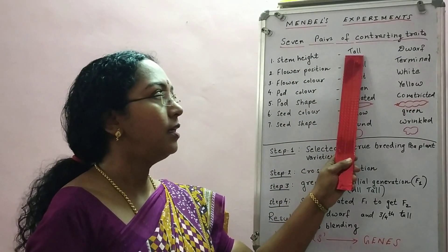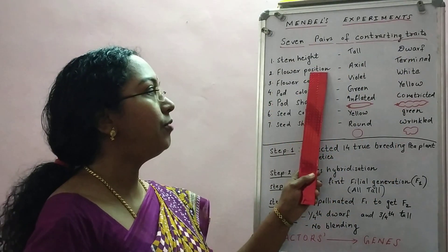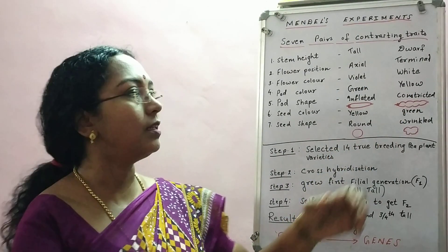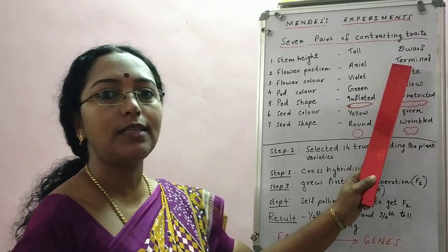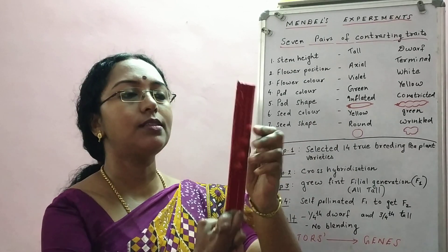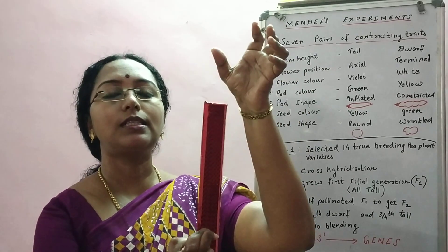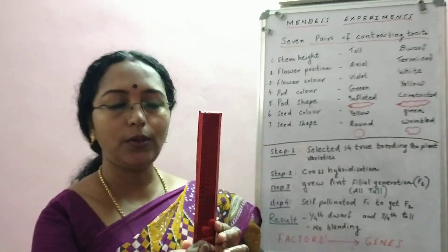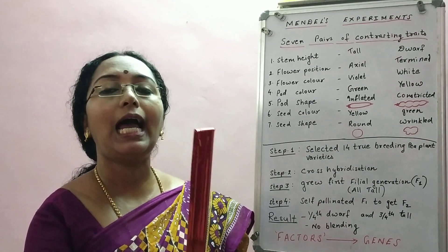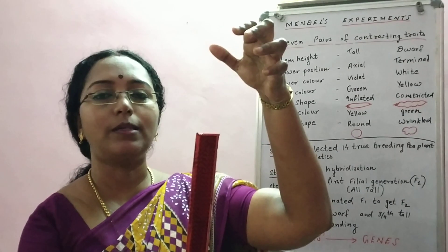For flower position, the flower is either axial or terminal. 'Terminal' means at the end — if flowers are at the end of the plant, the flower position is terminal. But if flowers come from the axis areas of the plant, you call it axial. So in some pea plants the flower is on the terminal part, and in others it is on the axial part.